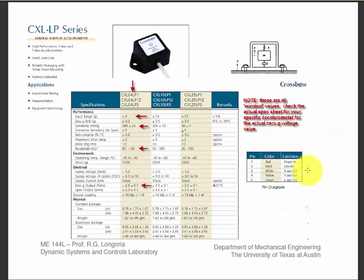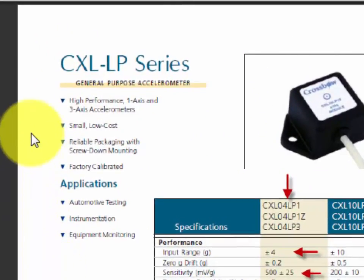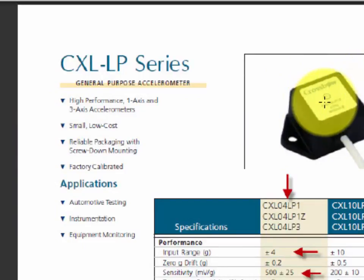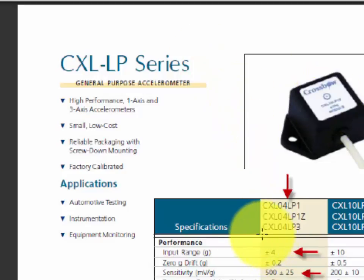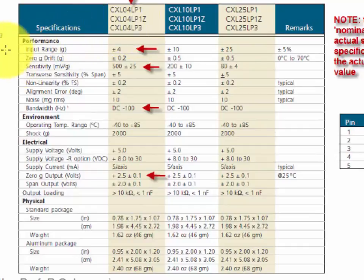Here's a general specification page for the type of accelerometer we're using in this course. These accelerometers are available with up to three axes, either single axis or up to three. The one we're using is the CXL04LP3, a three-axis accelerometer. The important specs to look at are the input range, the sensitivity in millivolts per g, the bandwidth, and the zero g output. There are other specifications here, but I'm just going to talk about those three most relevant for our lab.